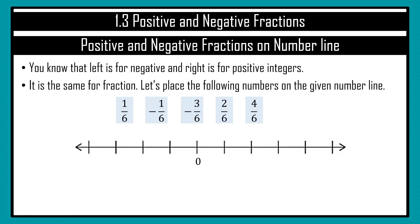We'll look more at computation later. Now let's look at how to represent fractions on the number line. Fractions also have negative and positive values. Remember that negative is towards the left of 0, and the positive number is towards the right of 0.